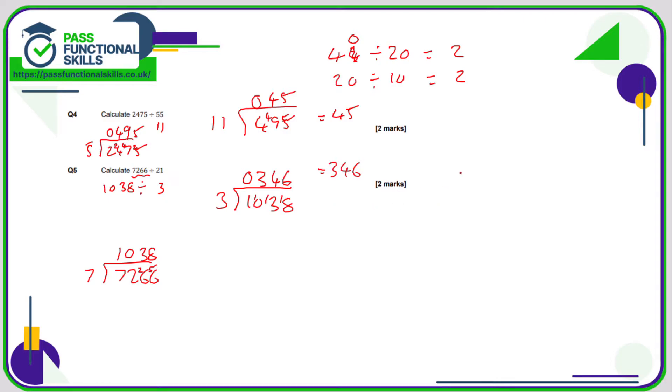And we can just double check that. 346 multiplied by 21 should equal 7266. You don't have to do this check, but if you want to, you can. One six is six. One four is four. One three is three. Put in a zero. Two sixes are 12. Two fours are eight, plus one is nine. Two threes are six. Add these together. Six, six, 12, seven. And it definitely works.